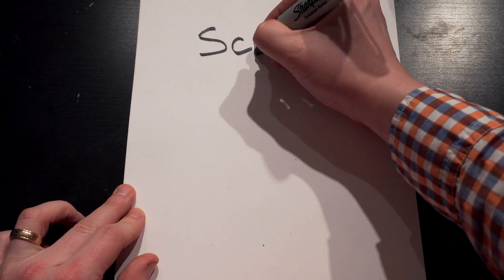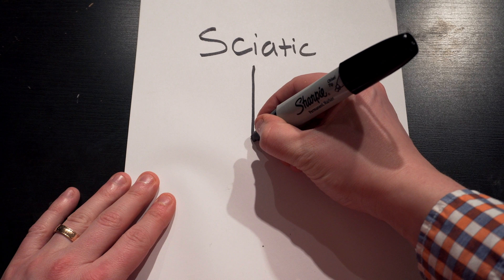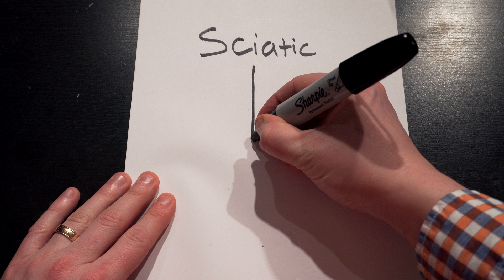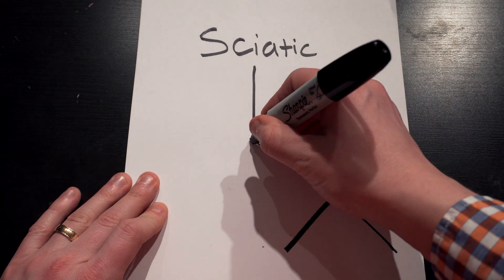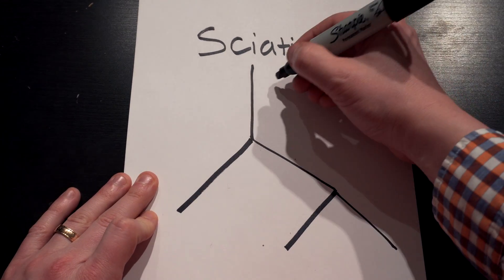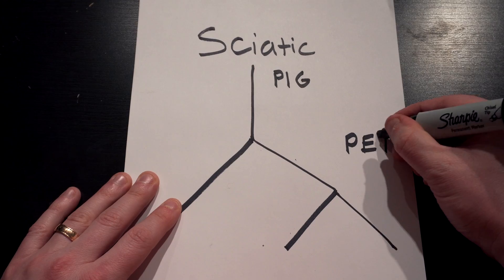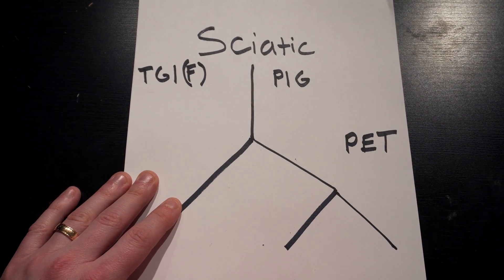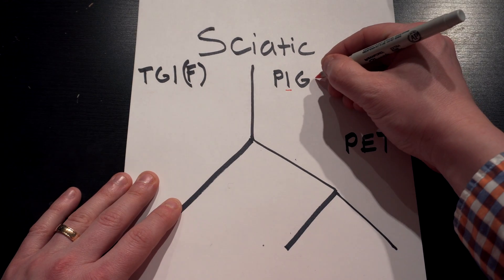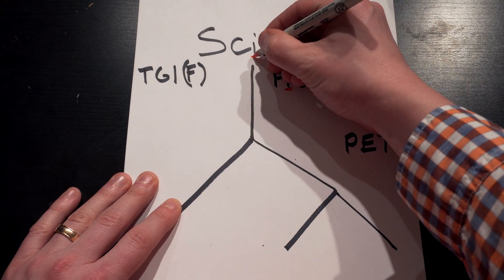So the sciatic nerve — let's split it up into its major components. Here is the top part. It's going to divide, and then divide again. Over here we're going to write PIG, over here PET, and over here TGIF. What do pigs give us? They give us ham — hamstrings. PIG has an I in it, sciatic nerve has an I in it. So the hamstrings are going to be localized up here in the main sciatic nerve.